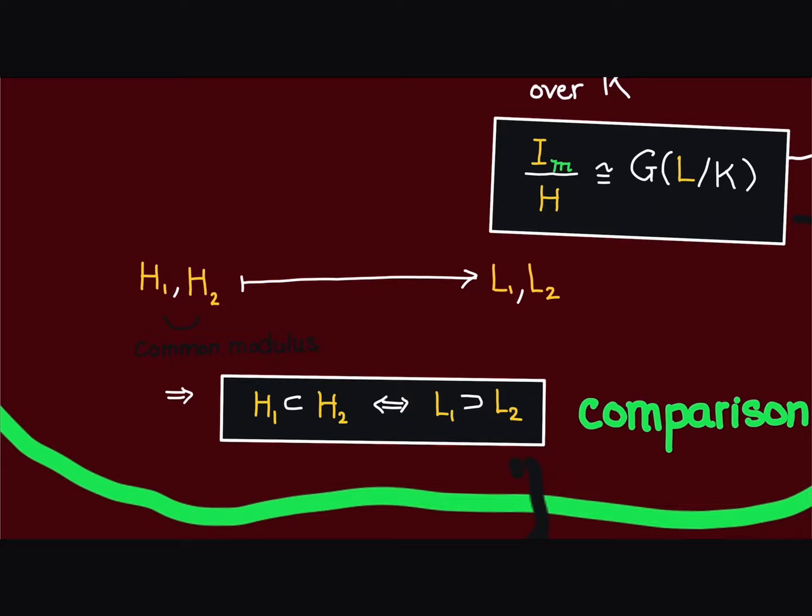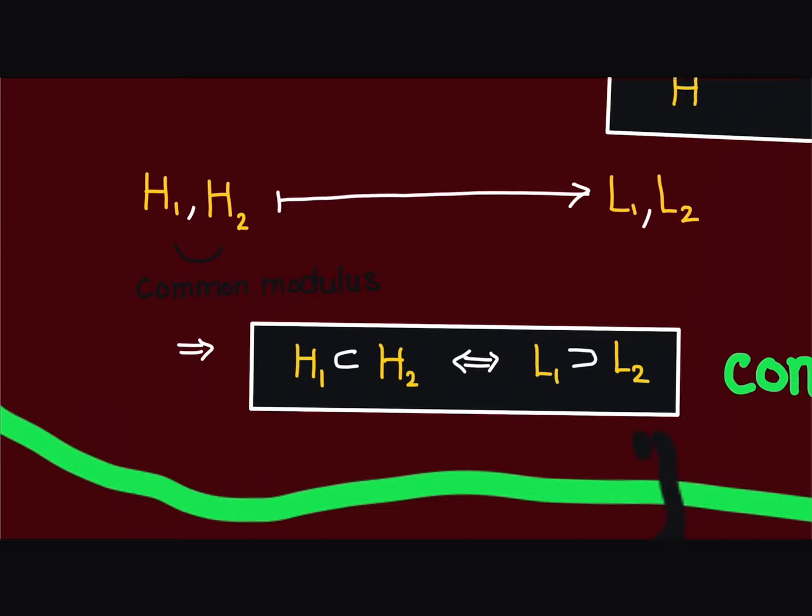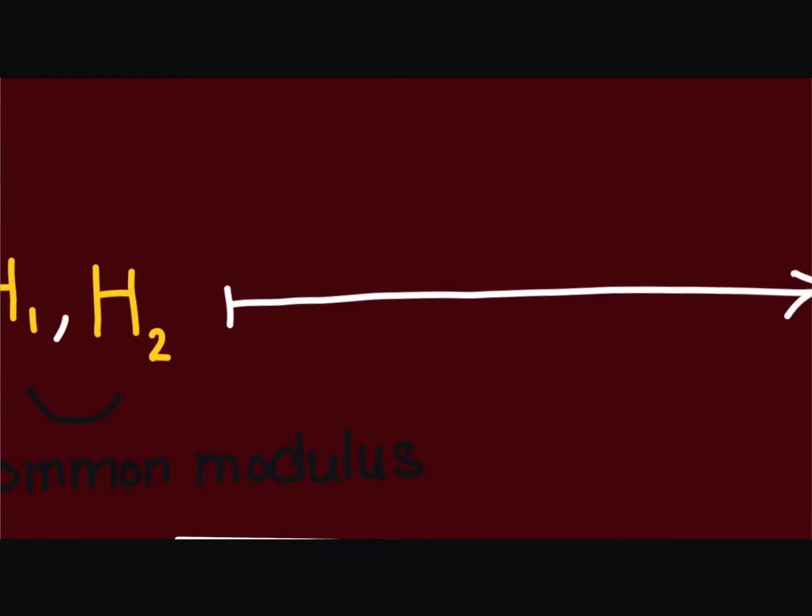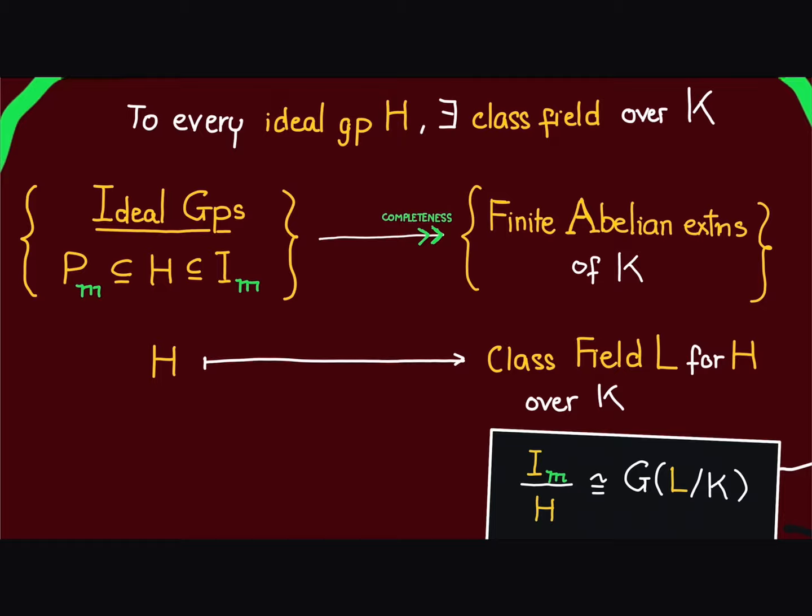We want to use the second part of Takagi's theorem, which says that if h1, h2 correspond to l1, l2, then h1 is contained inside h2 if and only if l1 contains l2. In other words, this correspondence between ideal groups and class fields is inclusion reversing.